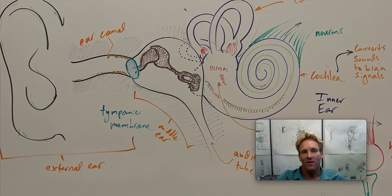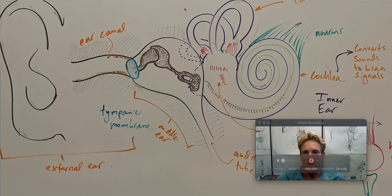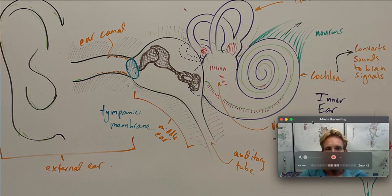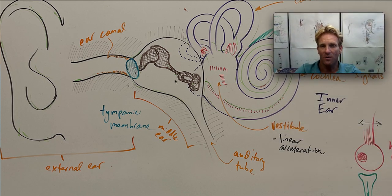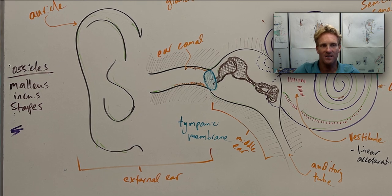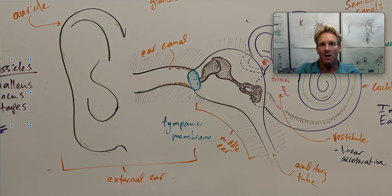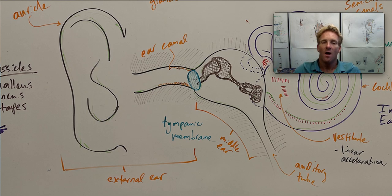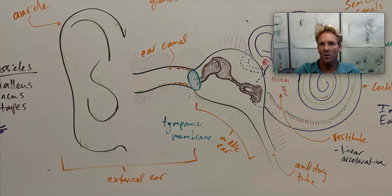On the other side of the tympanic membrane is where we have the middle ear. The middle ear is also filled with air, and it contains the three ossicles. From left to right, these include the malleus, the incus, and the stapes. As the tympanic membrane beats, it's going to cause these ossicles — these bones — to vibrate back and forth. These ossicles convert sounds that are in air and in the tympanic membrane into vibrations in bone. Not only that, but these ossicles help to amplify that sound — they turn them into a larger signal.